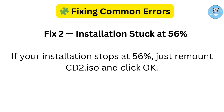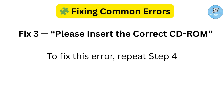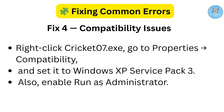The setup will then continue smoothly. To fix any remaining errors, repeat step 4 and copy the necessary game files again — that should resolve it. If the game doesn't launch or crashes, it might be a compatibility issue. Right-click cricket07.exe, go to Properties, then Compatibility, and set it to Windows XP Service Pack 3. Also enable 'Run as Administrator.'